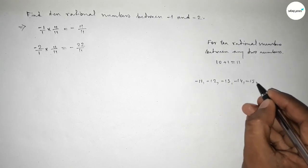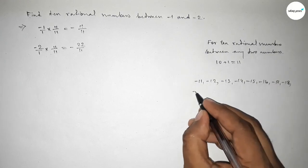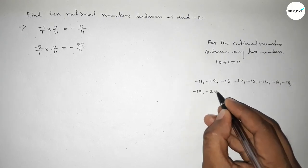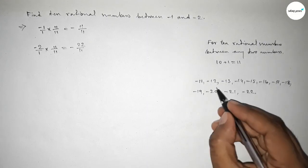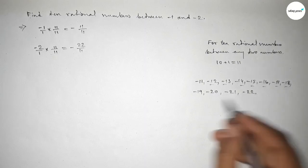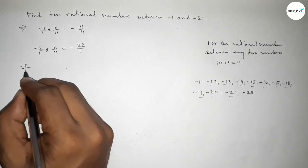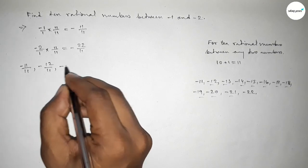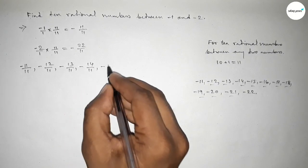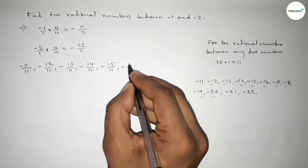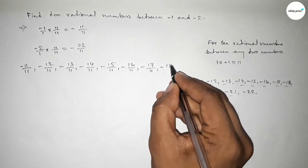Now between minus 11 and minus 22 we can get 10 negative integers. First, write down all 10 required negative integers. Then write down all the rational numbers: minus 11 over 11, minus 12 over 11, minus 13 over 11, and so on up to minus 22 over 11.